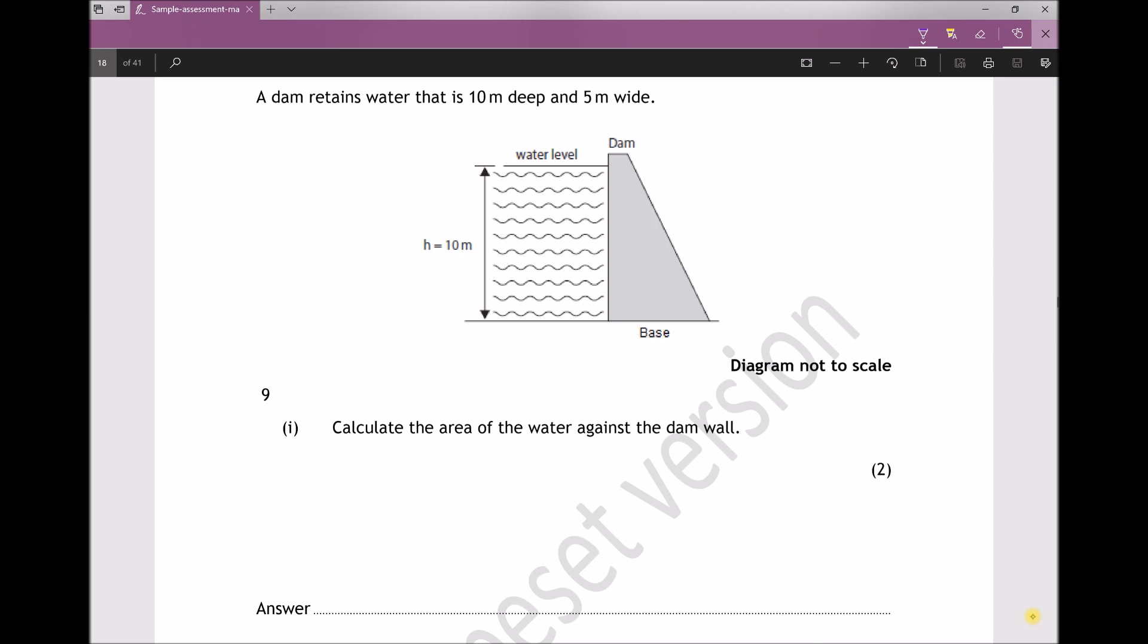So what we're referring to is the area that's in contact with the dam here. Now we're told that the water is 10 meters deep and we're told that it's 5 meters wide. So if we imagine looking at this end on, what we would see is the water at a depth of 10 meters and a width of 5 meters.